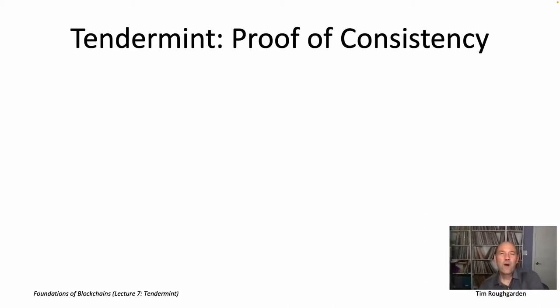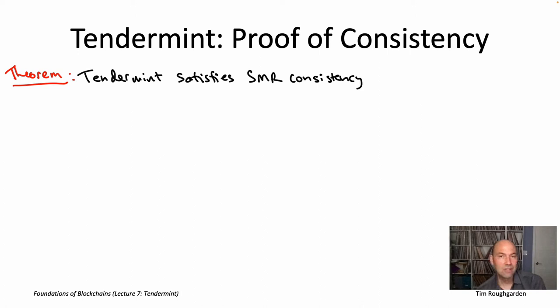So why is Tendermint designed the way that it is? It's so that it satisfies consistency and eventual liveness. It's certainly not obvious that the protocol satisfies either of those two properties, and you really should be demanding careful proofs. So in this video, let's start with a careful proof that the Tendermint protocol indeed satisfies consistency in the usual sense for a state machine replication protocol.